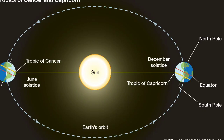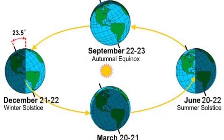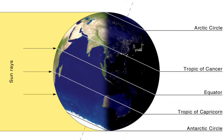The higher latitude regions of the earth receive more inclined rays as compared to the regions close to the equator, which receive more vertical rays of the sun. This happens because the earth is rotating on an inclined axis and revolving around the sun in its orbit. As a result, the amount of temperature received on the earth is not the same everywhere. The sun's rays are vertical near the equator and become inclined towards the poles.